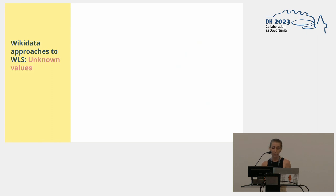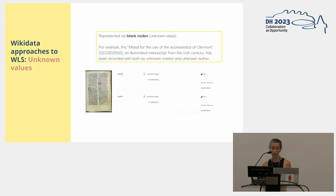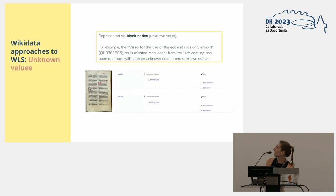Finally, we also analyzed unknown values. For example, this illuminated manuscript from the 14th century has been recorded with both unknown creator and unknown author. In this case, the unknown values are represented in RDF as blank nodes.